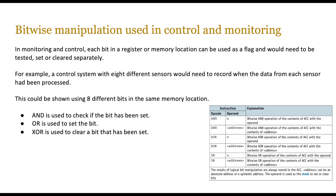Please pause the video and look through the short assembly language instruction code on screen — you will normally be given this in the exam and need to perform some bitwise manipulation based on it. For example, if the register is 1 1 1 1 1 1 1 1 and you use the AND operator with the value 0 0 0 0 0 0 0 0, you perform an AND operation on each corresponding bit in the accumulator and your data.